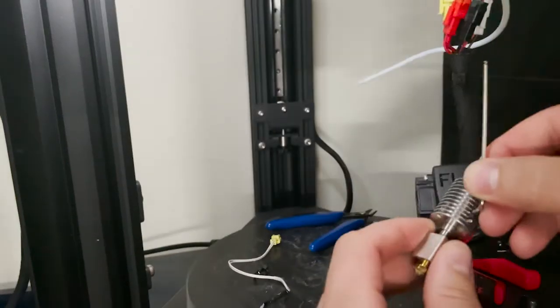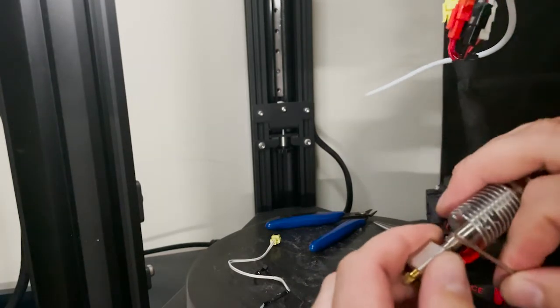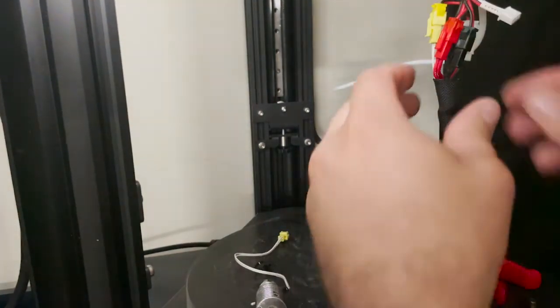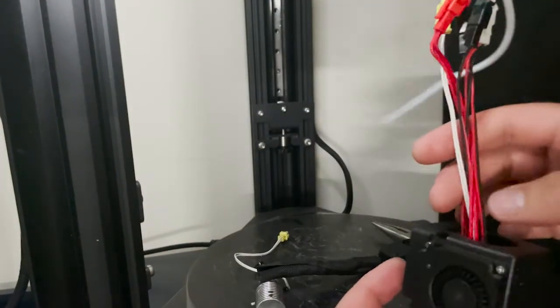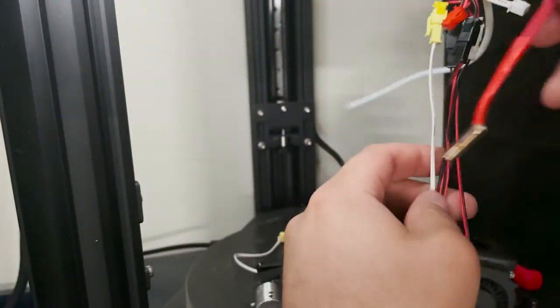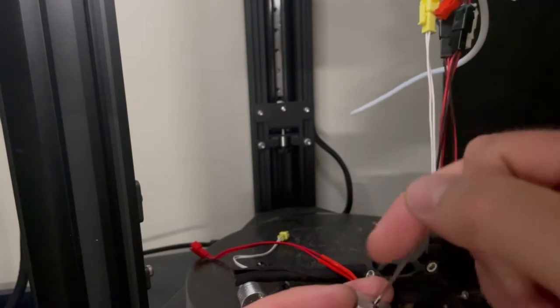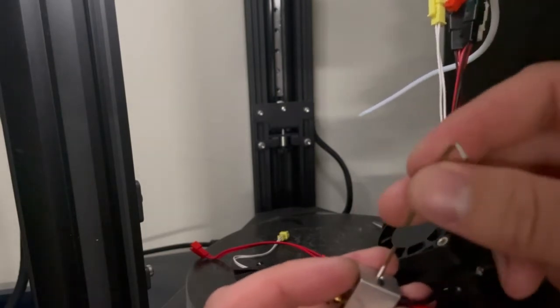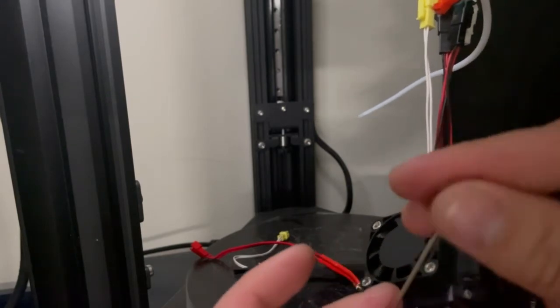There are two set screws here. And now, the heating element slides right out. The heating element itself was actually faulty in this. And I had just completed a print before it failed, which is interesting. That it was perfectly functional, and then it just died.